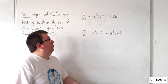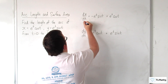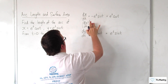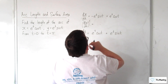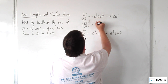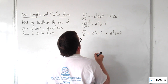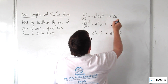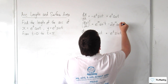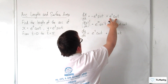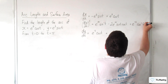Within the formula, we need to square both of these. Squaring dx/dt, we get e to the 2t sine squared t, then take away 2e to the 2t sine t cosine t, and then plus e to the 2t cosine squared t.